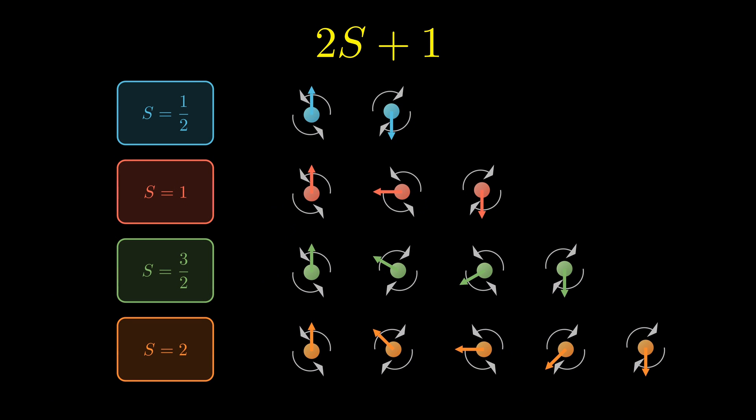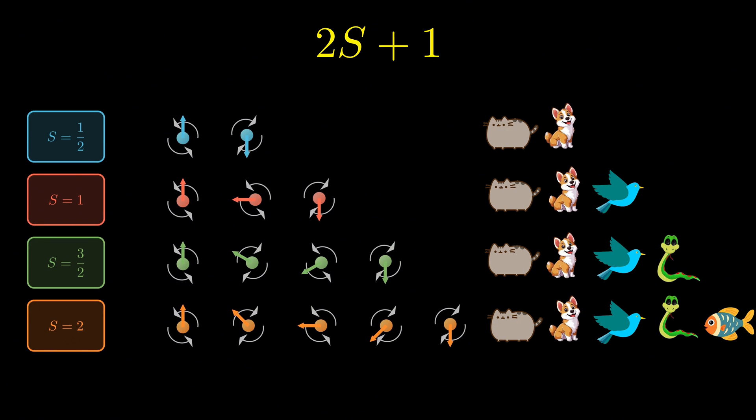For every machine learning classifier with a certain number of classes, there exists a dual spin system whose number of quantum states matches the number of classes. Mathematically speaking, the number of classes in the dual machine learning is equal to twice the spin of the particle plus one. For now, we'll keep working with the spin one example.